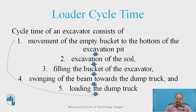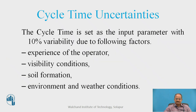The loader cycle consists of five major steps. First, movement of the empty bucket to the bottom of the excavation pit. Second, excavation of the soil or rock. Third, filling the bucket of the excavator. Fourth, swinging of the beam towards the dump truck, and finally loading the dump truck. Then the cycle returns to the first step. There are several cycle time uncertainties for which 10% variability is normally considered, depending on operator experience, visibility conditions, soil formation, and weather conditions.